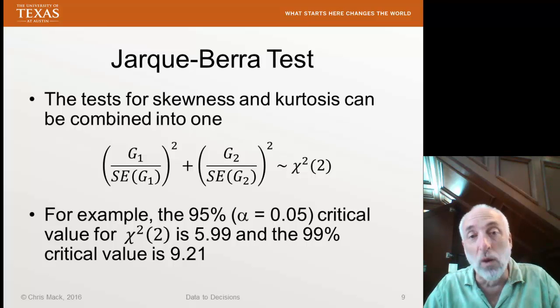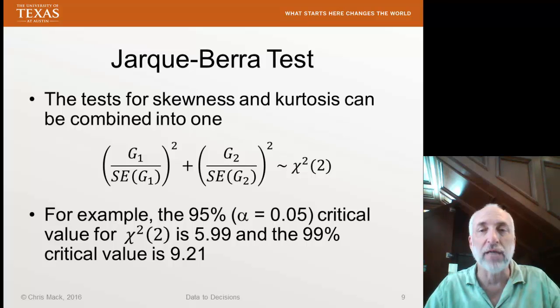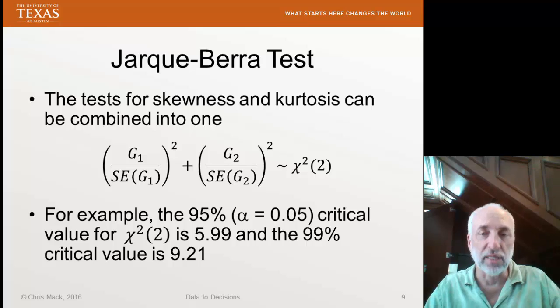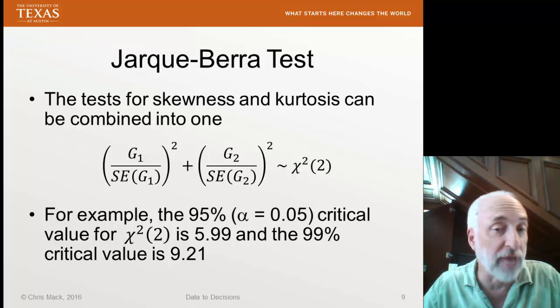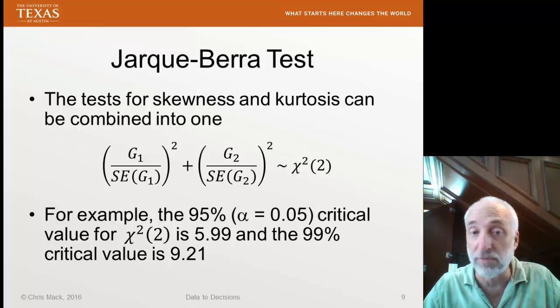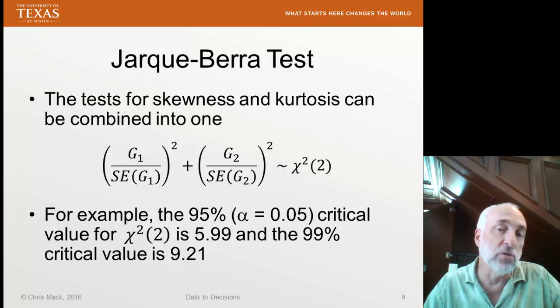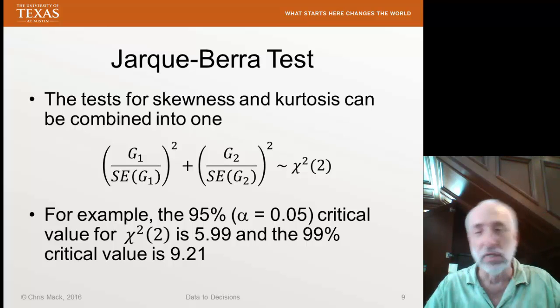So we could test this one single statistic against a critical value of chi-square. For example, with a significance level of 0.05, the critical value for chi-square with two degrees of freedom is about 6. And with alpha 0.01, the value is 9.2. So we could use those and do one test all at once.